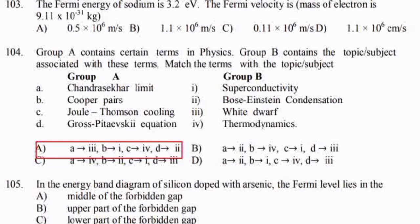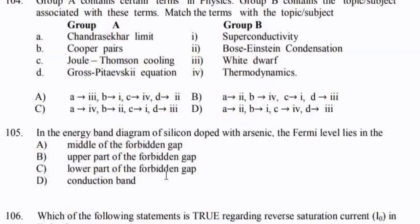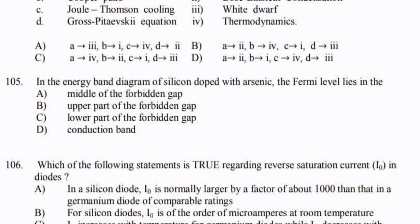In the energy band diagram of silicon doped with arsenic — that is, an N-type semiconductor — the Fermi level lies in the upper part of the forbidden gap. Option B.